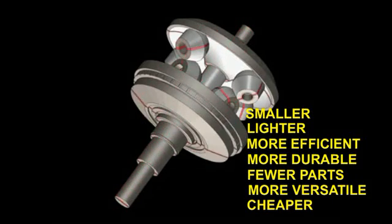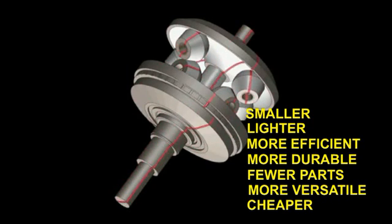The double roller full toroidal variator can deliver a smaller, lighter, more efficient, more durable, more versatile transmission, containing fewer parts and at a lower cost than any other form of automated transmission.